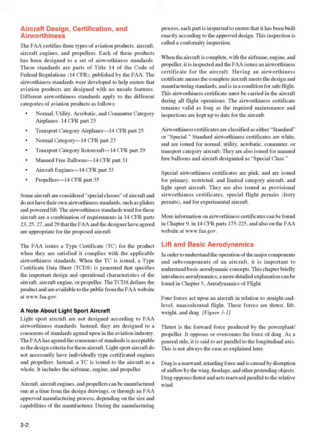The airworthiness standards used for special class aircraft are a combination of requirements in 14 CFR Parts 23, 25, 27, and 29 that the FAA and the designer have agreed are appropriate for the proposed aircraft. The FAA issues a type certificate, TC, for the product when they are satisfied it complies with the applicable airworthiness standards.